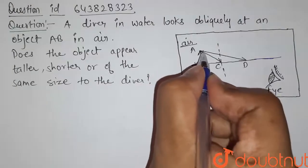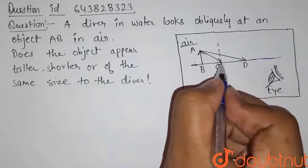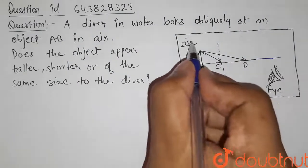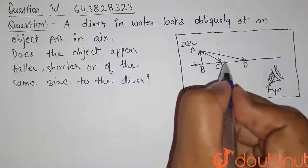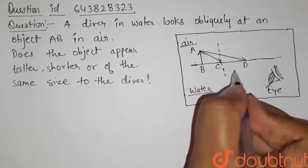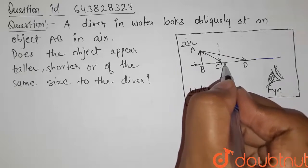Now here we have these two rays coming from the head of this object. On reaching the boundary, there is a change of medium, that is from air to water. And we know if a ray goes from one medium to other, there is a refraction.